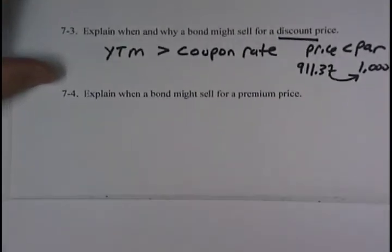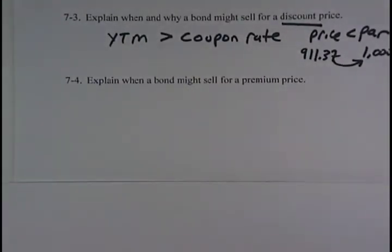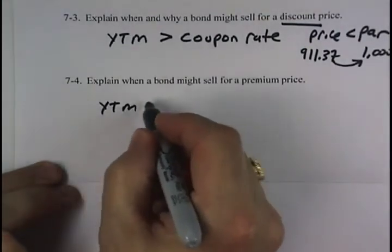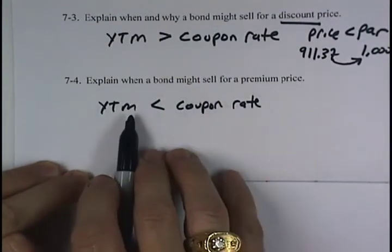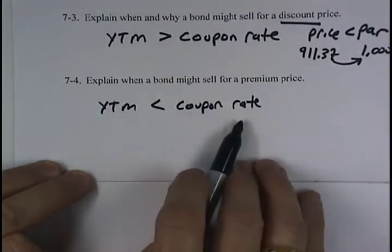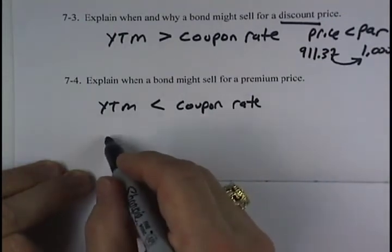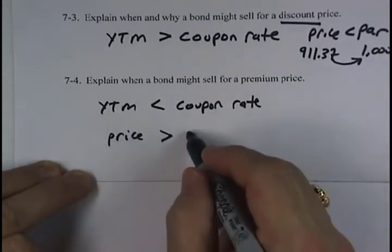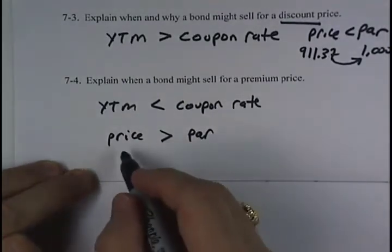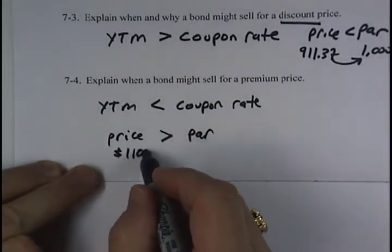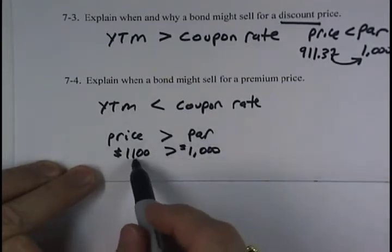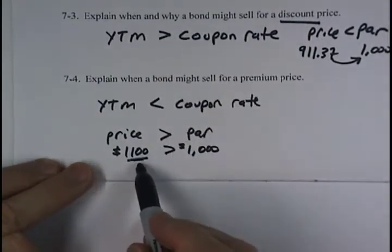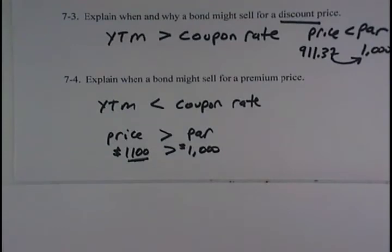The reverse causes the bond to sell for a premium price. If the coupons are relatively attractive, meaning that the coupon rate is above the bond's yield to maturity, then it's paying out coupons at a relatively attractive rate. And in that case, the bond's price will be above its par value. You might be willing to pay something like $1,100, for example, to buy a bond with a $1,000 par value because those high coupons make you willing to pay an extra $100 over and above the par value to buy the bond because it's paying coupons out at a relatively high rate.